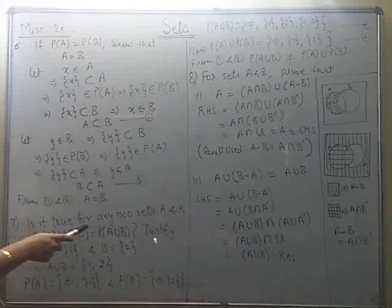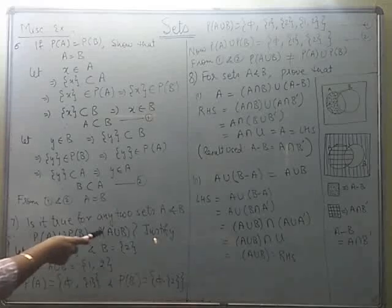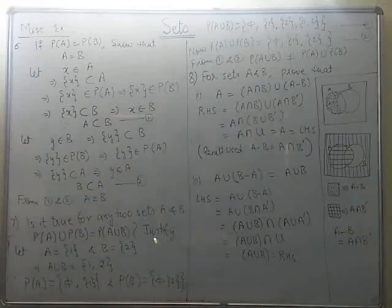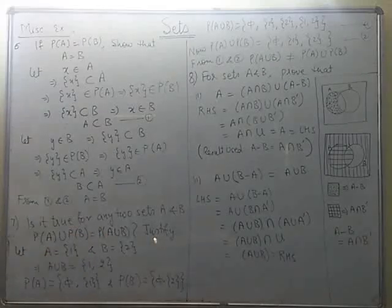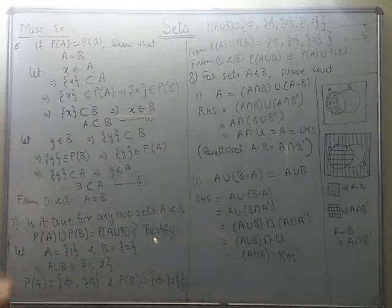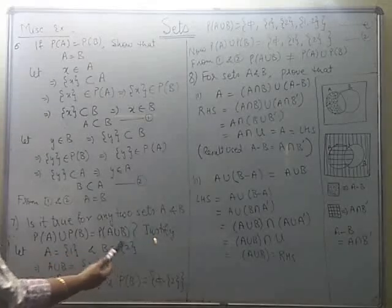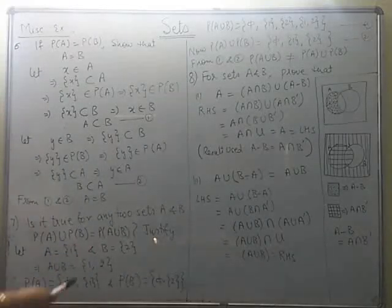They are asking: is it true that for any two sets A and B, the power set of A union power set of B will be equal to the power set of A union B? Justify. They are asking us to justify, meaning if this is not true we can explain it through an example. We take A as a set containing only one element to make calculations easier — say A = {1} and B = {2}. A union B will then be the set containing 1 and 2.